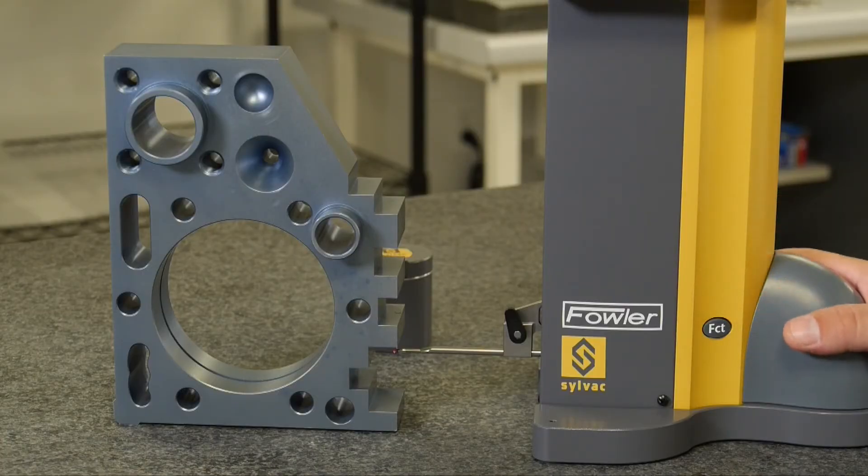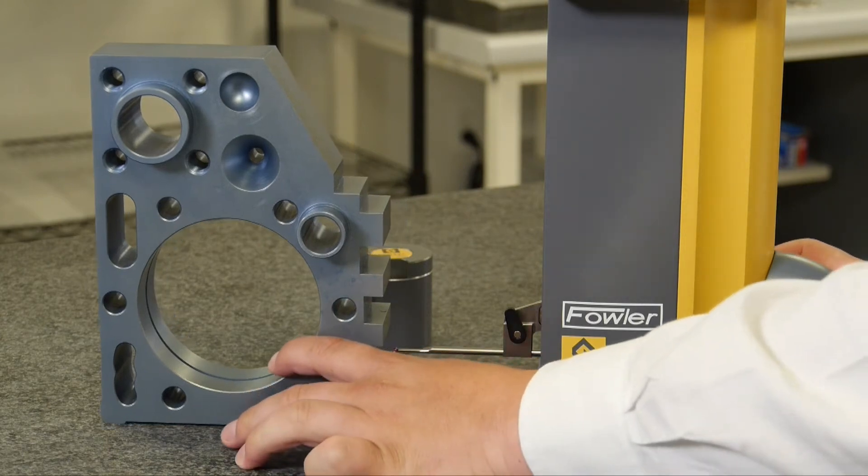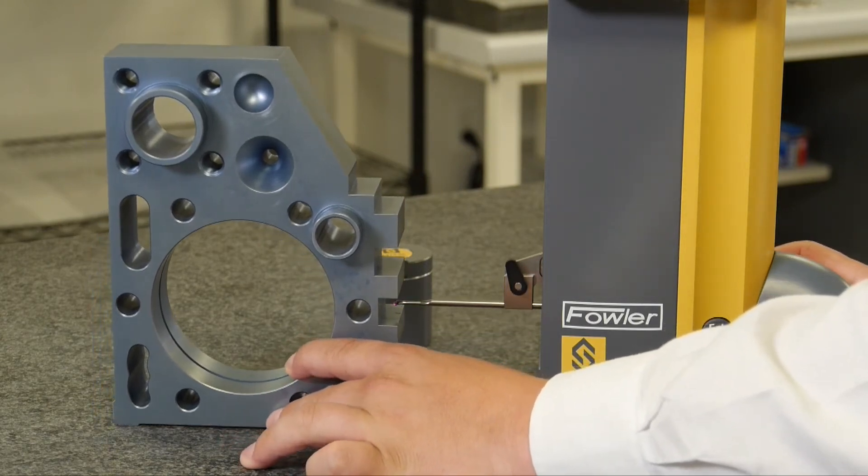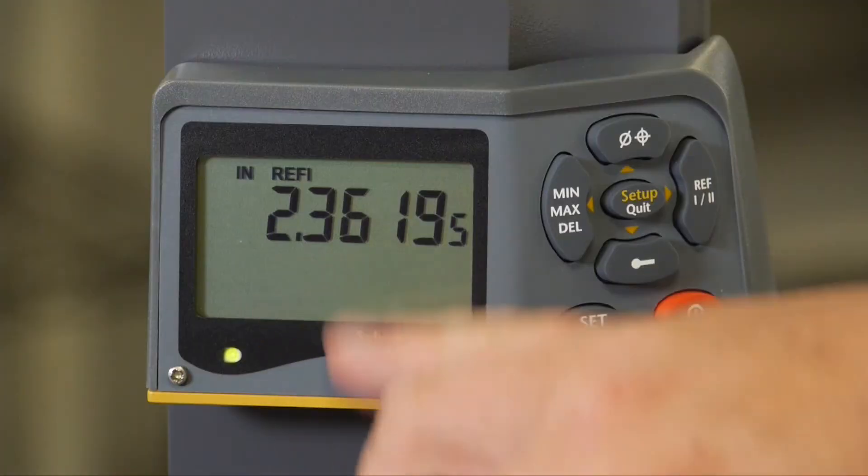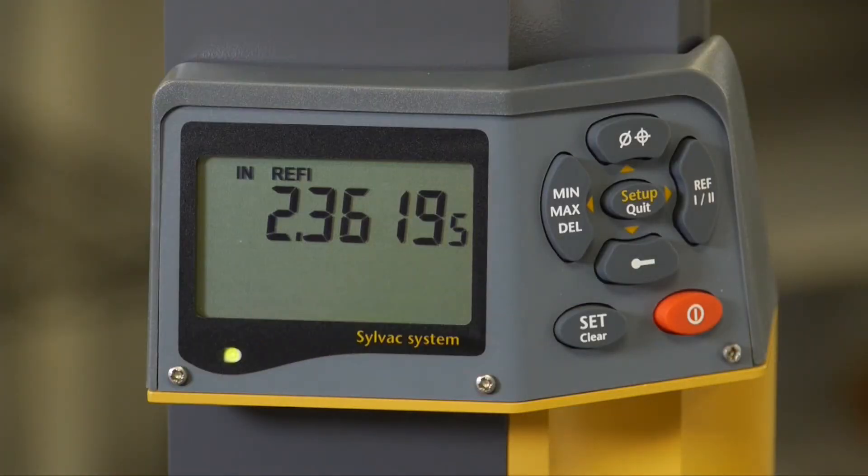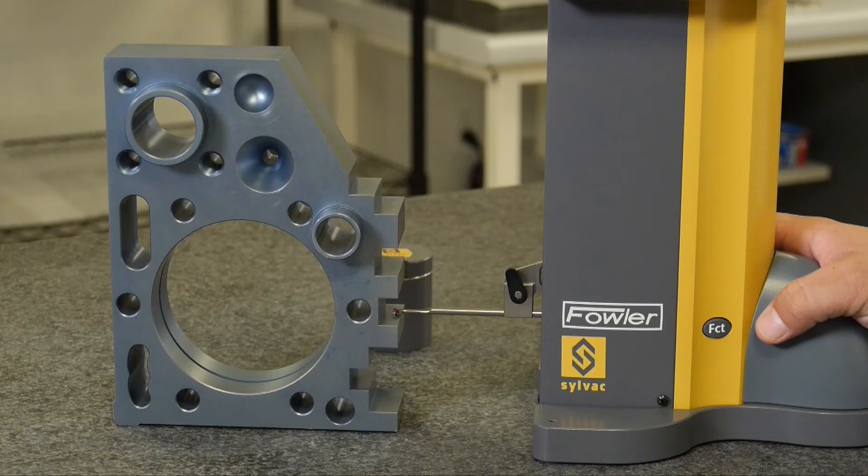So if I were to drive up and take another measurement, engage my probe, 2.36 is the distance from my current surface to my plate, my reference position.